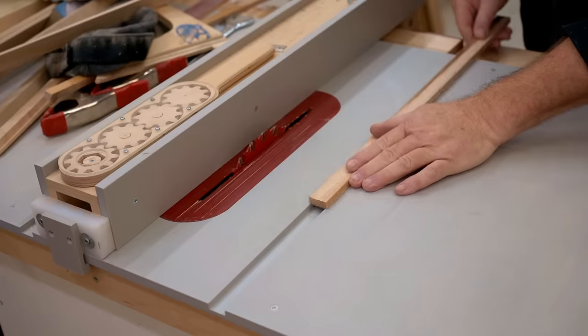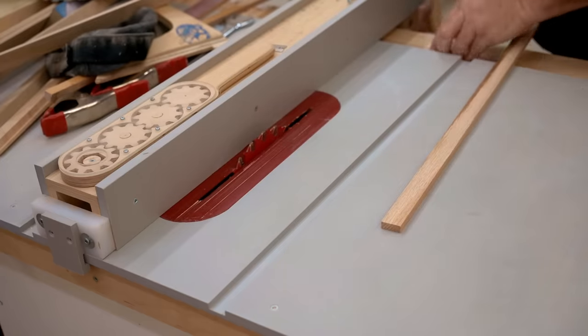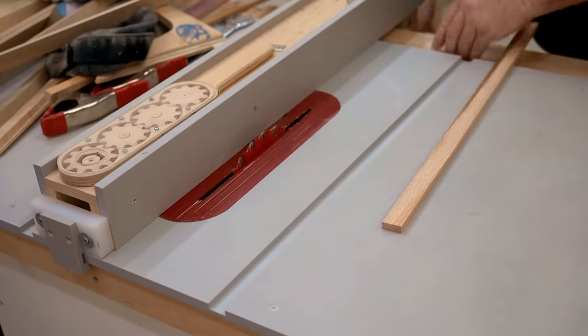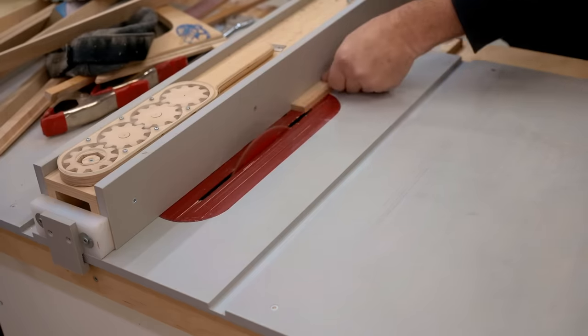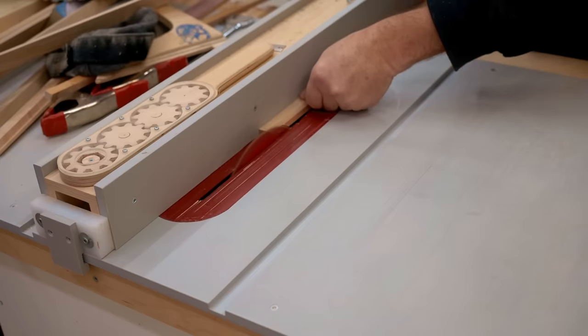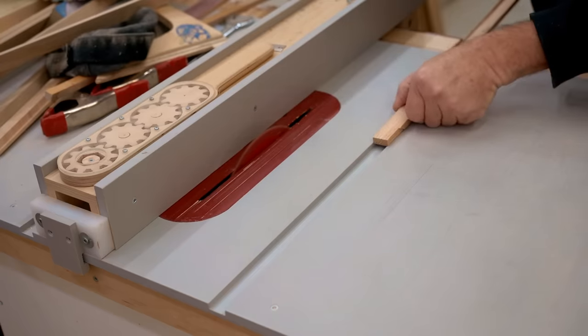While I'm waiting for the glue to dry, I can make the cleat that rides in the miter slot in the saw. I've got a scrap of oak here that's just about the right thickness and the right width. I'm going to trim it down until it's a perfect fit in the slot.